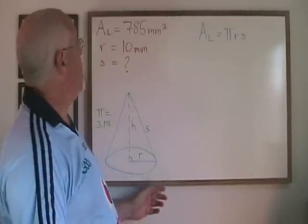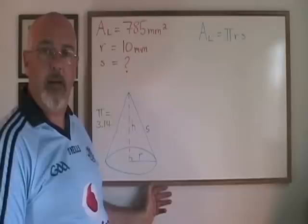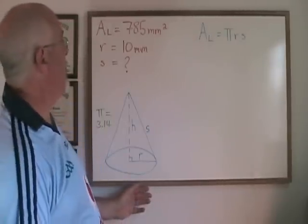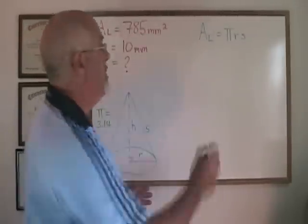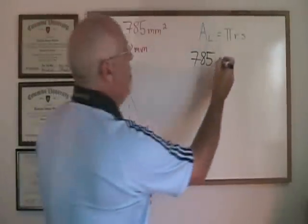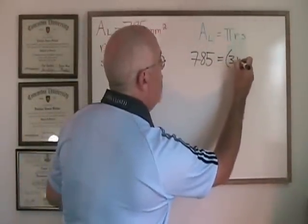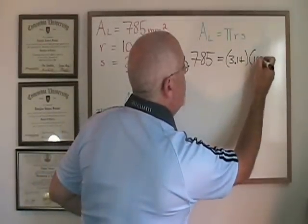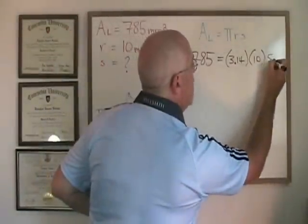What if we are given the lateral area and the radius, but we are asked for the slant height? Again, this is a matter of plugging the values into the formula and simplifying. The lateral area is 785 millimeters squared, so 785 goes in the AL position, pi is 3.14, r is 10, and the slant height is the unknown, so I will use s as a variable.